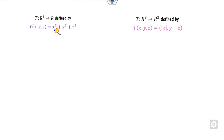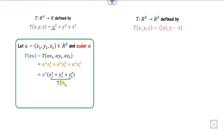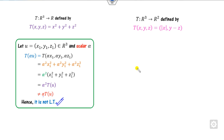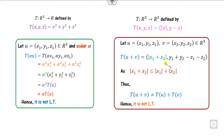Looking at two more properties: one involves a non-linear function — not a linear transformation. Mod x is also non-linear. For the proof, taking alpha U and substituting gives alpha squared times T(U), but we need alpha — hence not a linear transformation. For mod x, starting with U plus V: |x + y| is always less than |x| plus |y|, so equality never holds, and it is not a linear transformation.